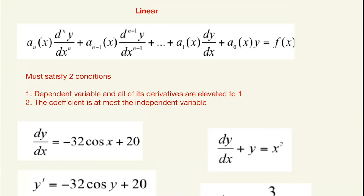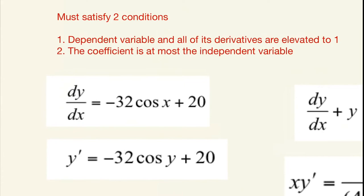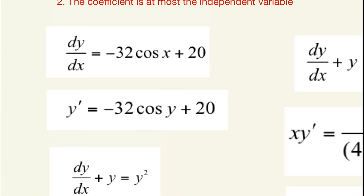Now let's learn how to identify if a differential equation is linear. We're going to pay attention to two things: what the expression is elevated to, and the coefficient before the derivative and the function. The dependent variable must be, in all of its derivatives, elevated to one, and the coefficient is at most the independent variable. In our first example, we have the derivative of y with respect to x, the coefficient is one, and it's elevated to one — so this is a linear function.